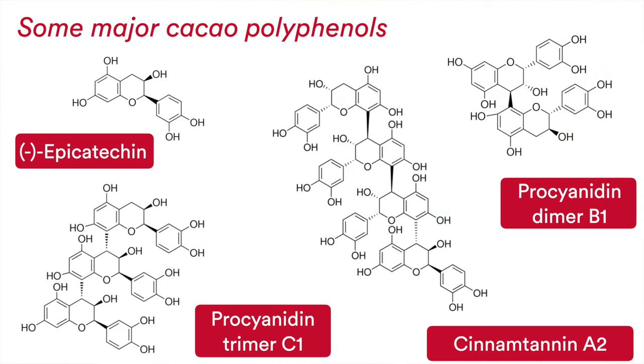For example, cocoa polyphenols are very potent antioxidants. They can protect the plant from UV damage, from fungi, from parasites. They're quite bitter, which prevents animals from feasting on the plant. But also, it's these same compounds that give dark chocolate its bitter and slightly astringent flavor — that puckering sensation on the tongue. During fermentation, many of these compounds are oxidized into larger polymers, which reduces the overall bitterness, making the cocoa more palatable, and also gives it a beautiful red-brown color.